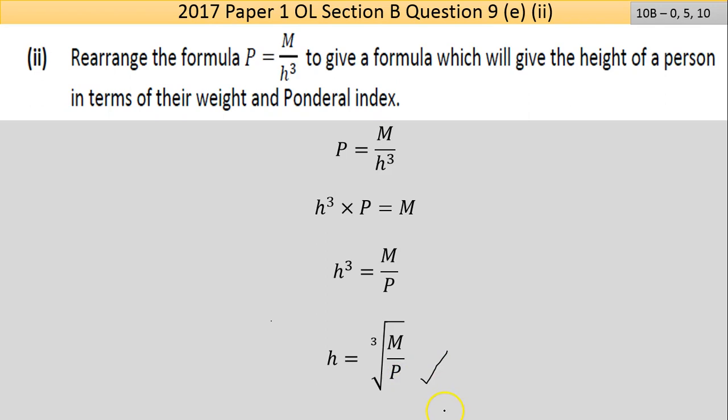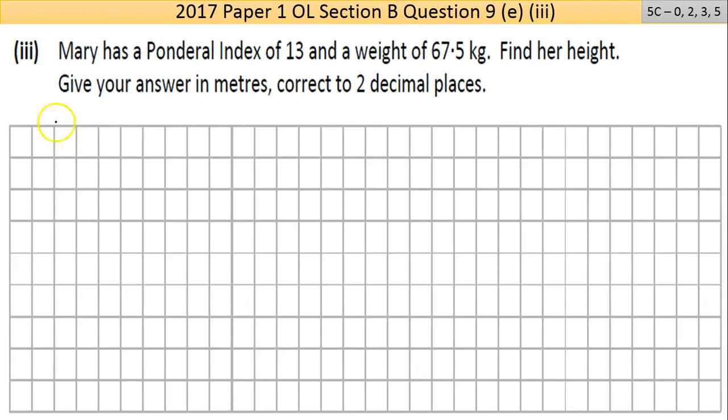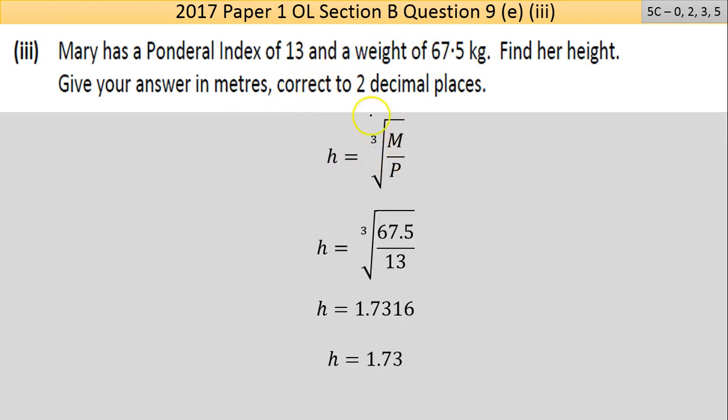Part E(iii): Mary has a Ponderal Index of 13 and a weight of 67.5 kilograms. Find her height. I have the formula with two of the three unknowns, so I can go straight to the answer. Using h = ³√(M/P), I put in 67.5 for the mass and 13 for the Ponderal Index. Calculating carefully, I get a height of 1.73 meters.